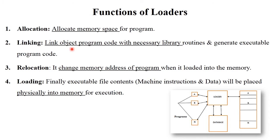Now, the functions of the loader. There are four main functions. First, allocation — the loader allocates memory space to the particular program. Second, linking — the loader links the object program code with necessary library functions and additional frameworks. Third, relocation — it changes the memory address of the program when it is loaded from secondary memory to primary memory, and this address change is handled by the loader.